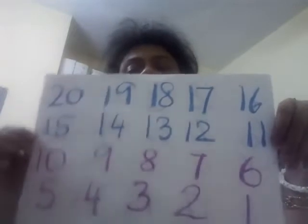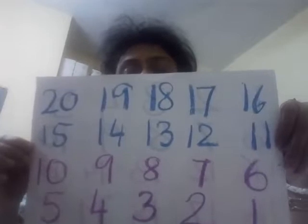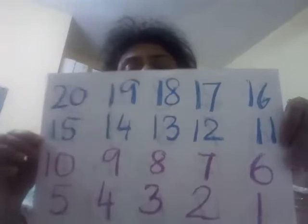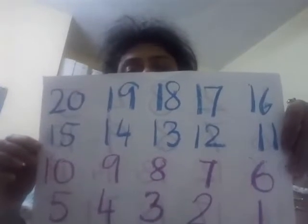20, 19, 18, 17, 16, 15, 14, 13, 12, 11, 10, 9, 8, 7, 6, 5, 4, 3, 2, 1.